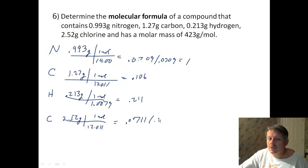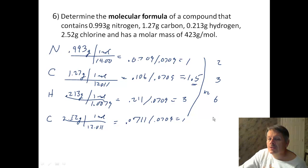So I divide by the smallest, 0.0709. That's going to give me one for nitrogen. Same thing for chlorine, it's going to give me one. For carbon, I get 1.5. And for hydrogen, I get 3. All right. So here's my only fraction. So to get rid of a 0.5, I have to multiply by 2. So everything gets multiplied by 2. And this becomes 2, 3, 6, 2. So that tells me my empirical formula is N2C3H6Cl2.